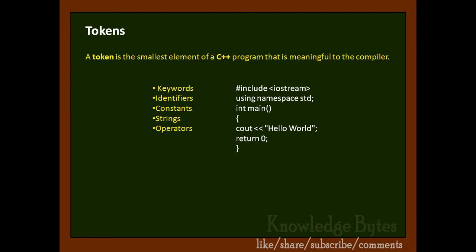Let's cross check these answers. Tokens are: include, iostream, using, namespace, std, int, main, opening parenthesis, closing parenthesis, opening curly brace, then cout, then the insertion operator, then double quote. Within double quote, Hello World, this is a string.